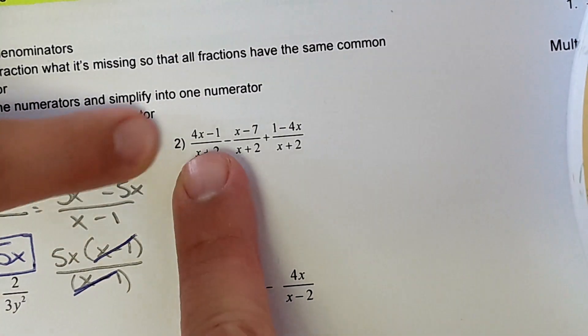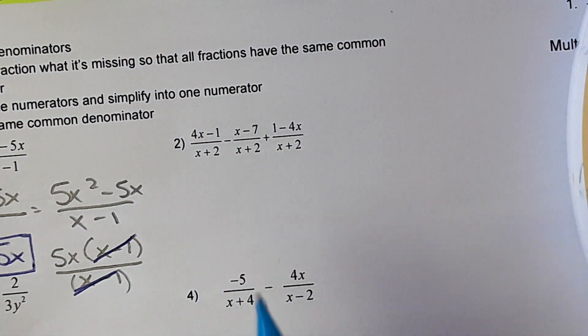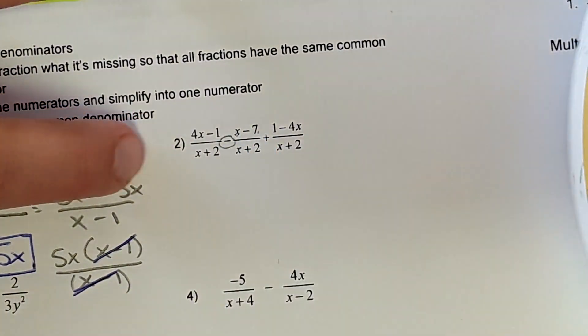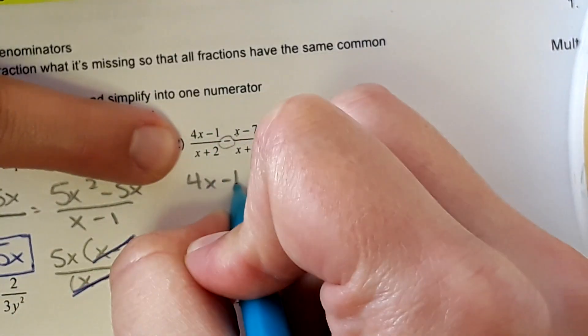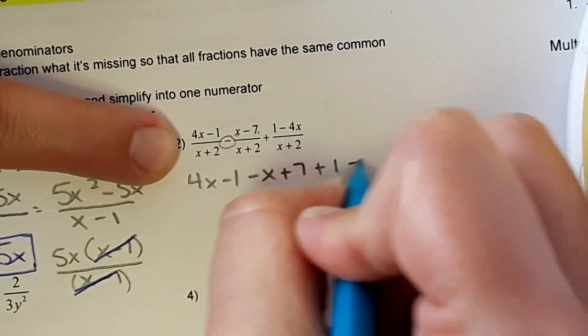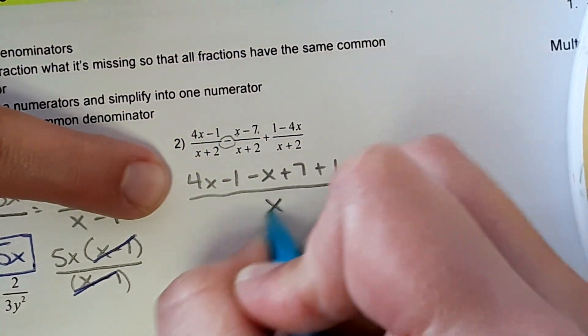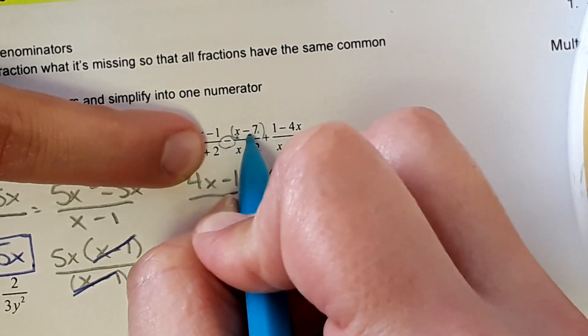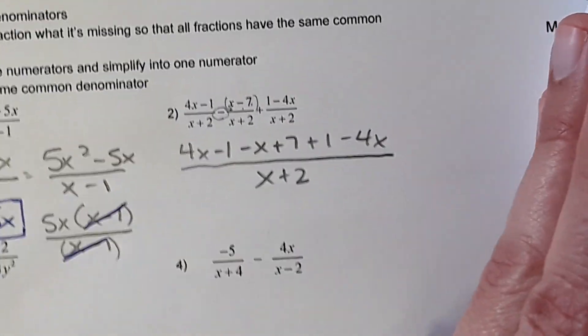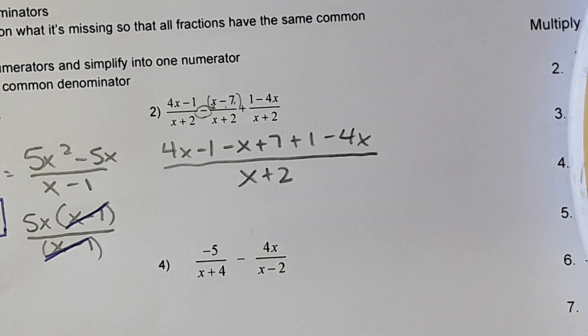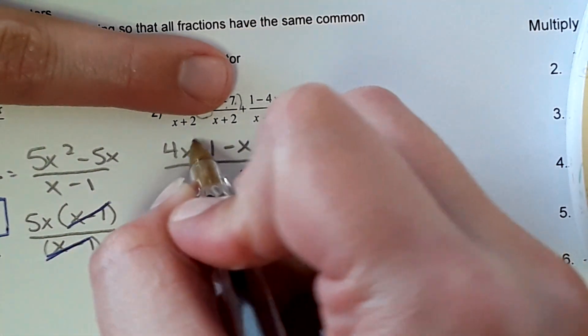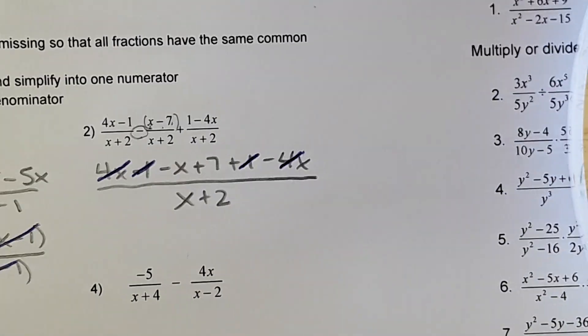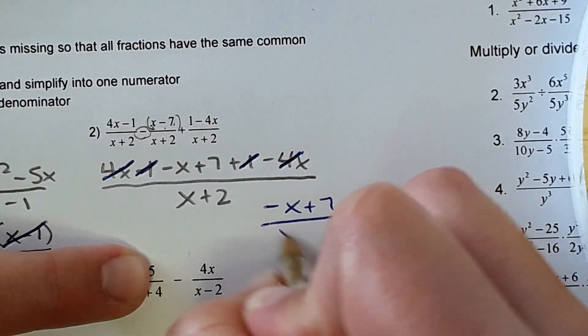Now we have three terms. Luckily, the denominators are all x plus 2, so we don't have to worry about anything there. So I'm going to write this all out. Notice that there is a subtraction symbol here, so I'm going to apply that subtraction to both of those terms as I write it out. So 4x minus 1 minus x plus 7 plus 1 minus 4x. So because of the subtraction here, it's subtracting the whole thing. So minus x and then plus 7. And now we can cancel stuff and find like terms. So 4x minus 4x, that's just 0. That cancels. Negative 1 and positive 1, nothing. And then we're left with negative x plus 7 over x plus 2.